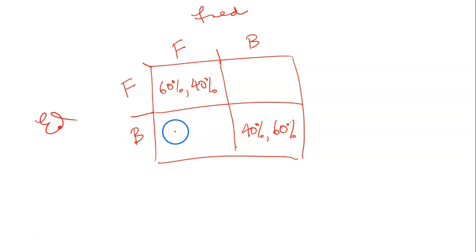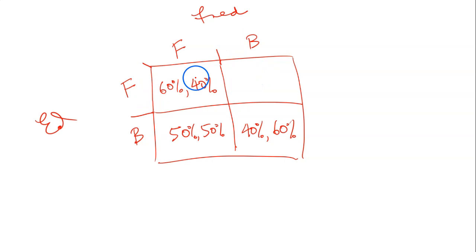It looks symmetrical. What about forehand to backhand — his forehand against my backhand? Let's say it's 50-50, either one of us could win. And equally, forehand to his backhand — I've got a strong forehand, he's got a strong backhand — let's say it's also 50-50 in that case.